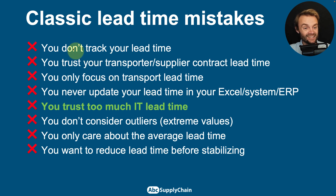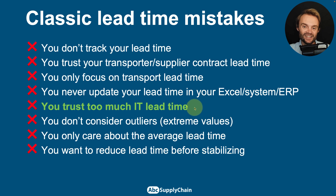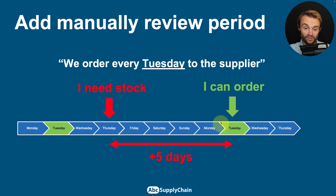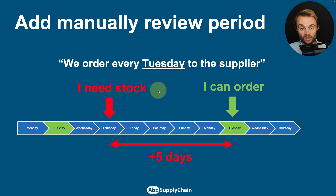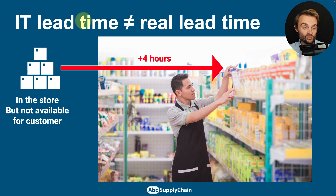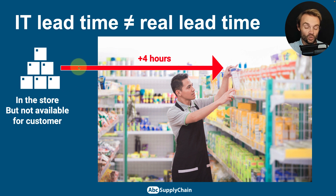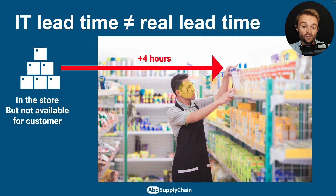Be careful not to trust your IT lead time too much. You may forget the review period — if you can only order once a week, be careful to add the review period on top of your average lead time, as it is usually not tracked in your system. Also, even if your IT lead time is correct, your customer may not see the benefit immediately — for example, if inventory needs an extra four hours to move from the reception area to the store shelf.